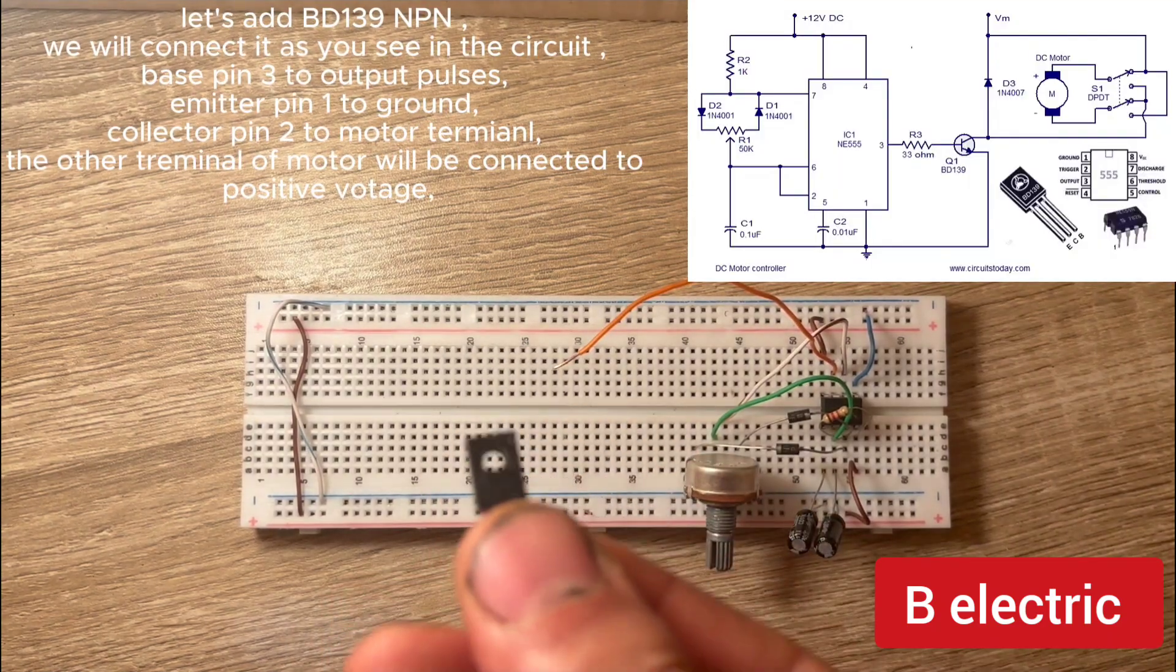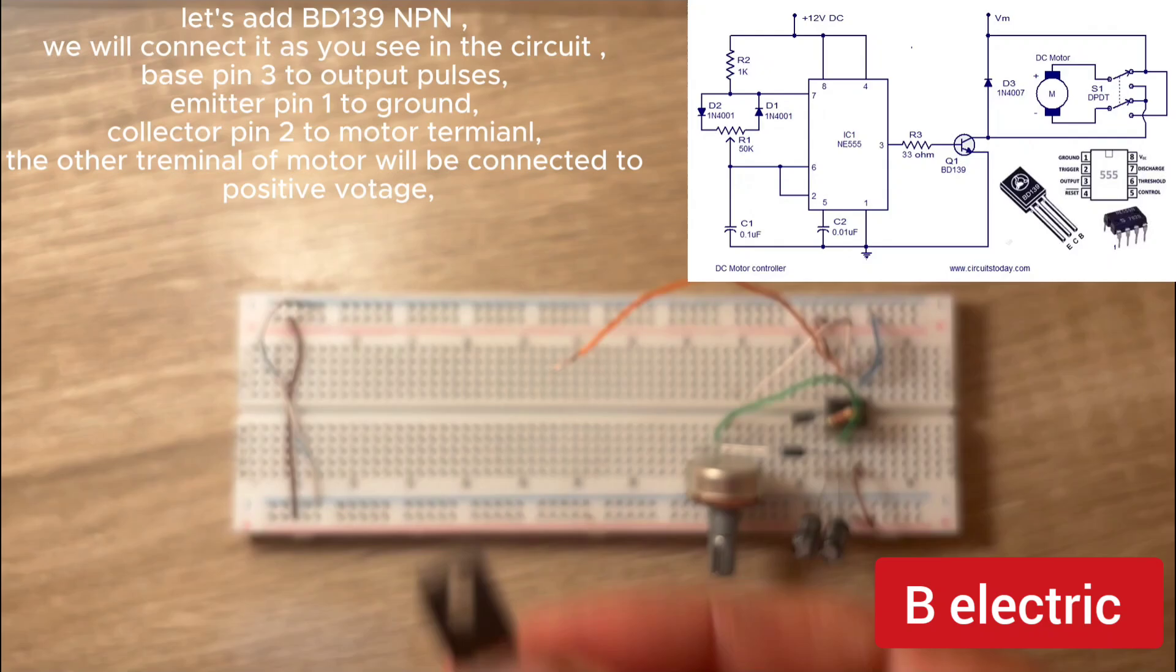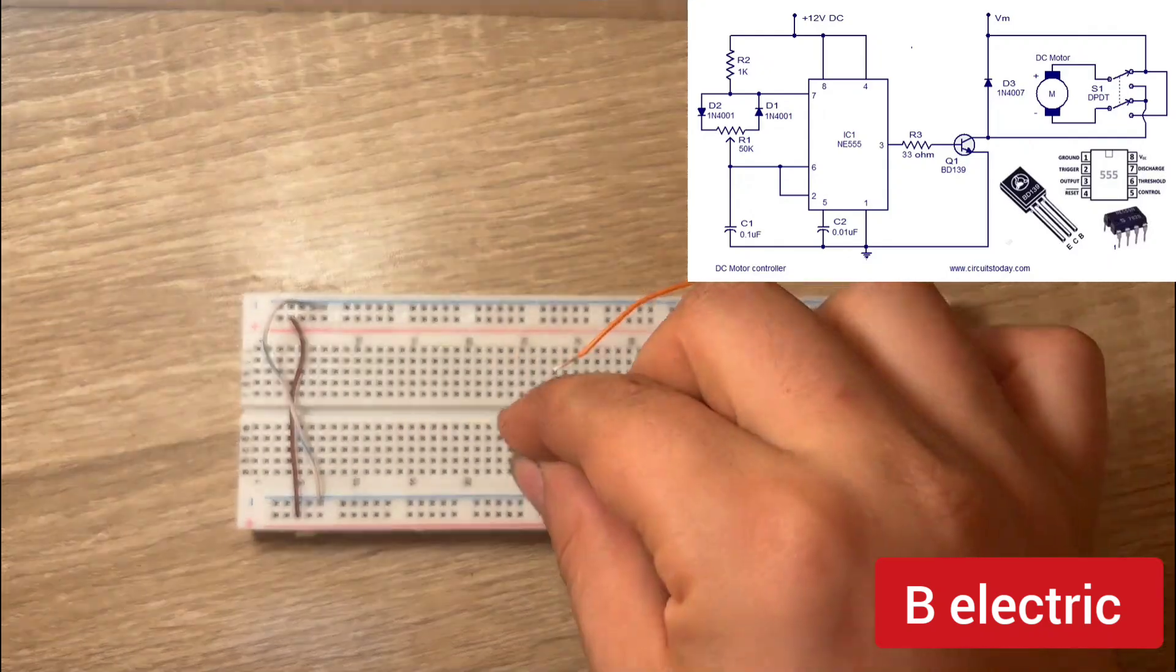DC motor speed control. Let's add BD 139 NPN. We will connect it as you see in the circuit.